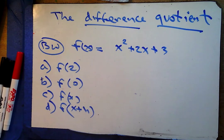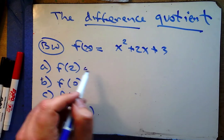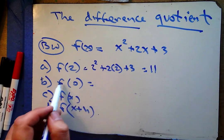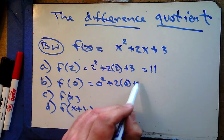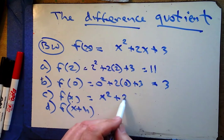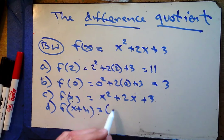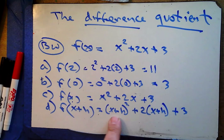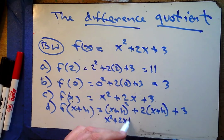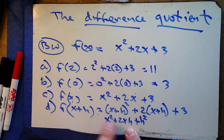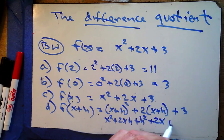Welcome back. When I plug 2 in for all the x's I get 4 + 4 + 3 = 11. When I plug 0 in for all the x's I got 3. For f(x), I didn't have to do anything — I just had to recognize it. But for f(x+h) I needed to do (x+h)² + 2(x+h) + 3. Don't forget this is FOILing: x² + 2xh + h² + 2x + 2h + 3. If you just applied the exponent without FOILing, you would miss the middle term.